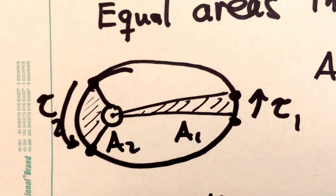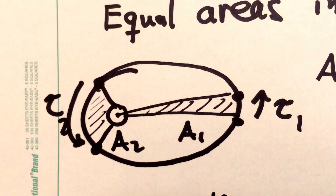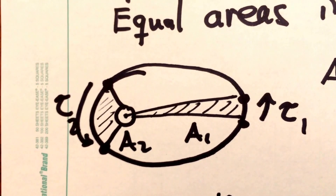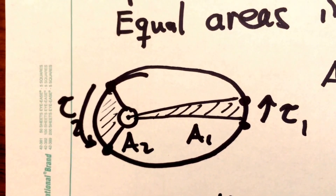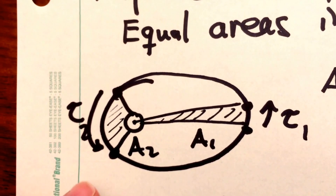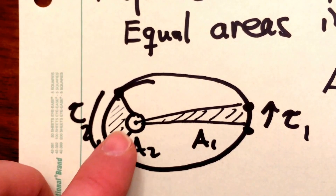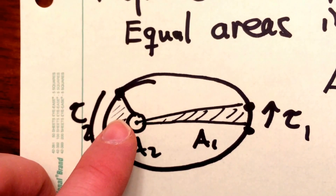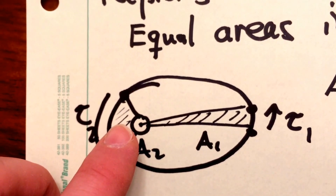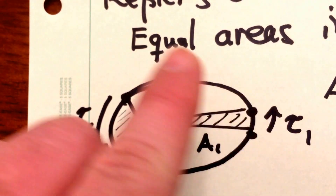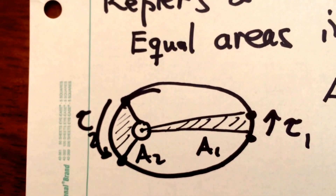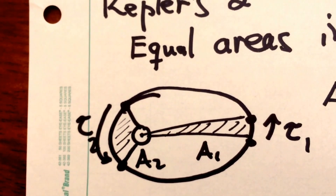Here's a cartoon of a planet circling the sun in its orbit. All planets move in elliptical orbits, and here I've exaggerated the ellipticity of a planetary orbit. Here's the sun at one of the foci of the orbit, and here's the planet moving around the sun in its elliptical orbit.